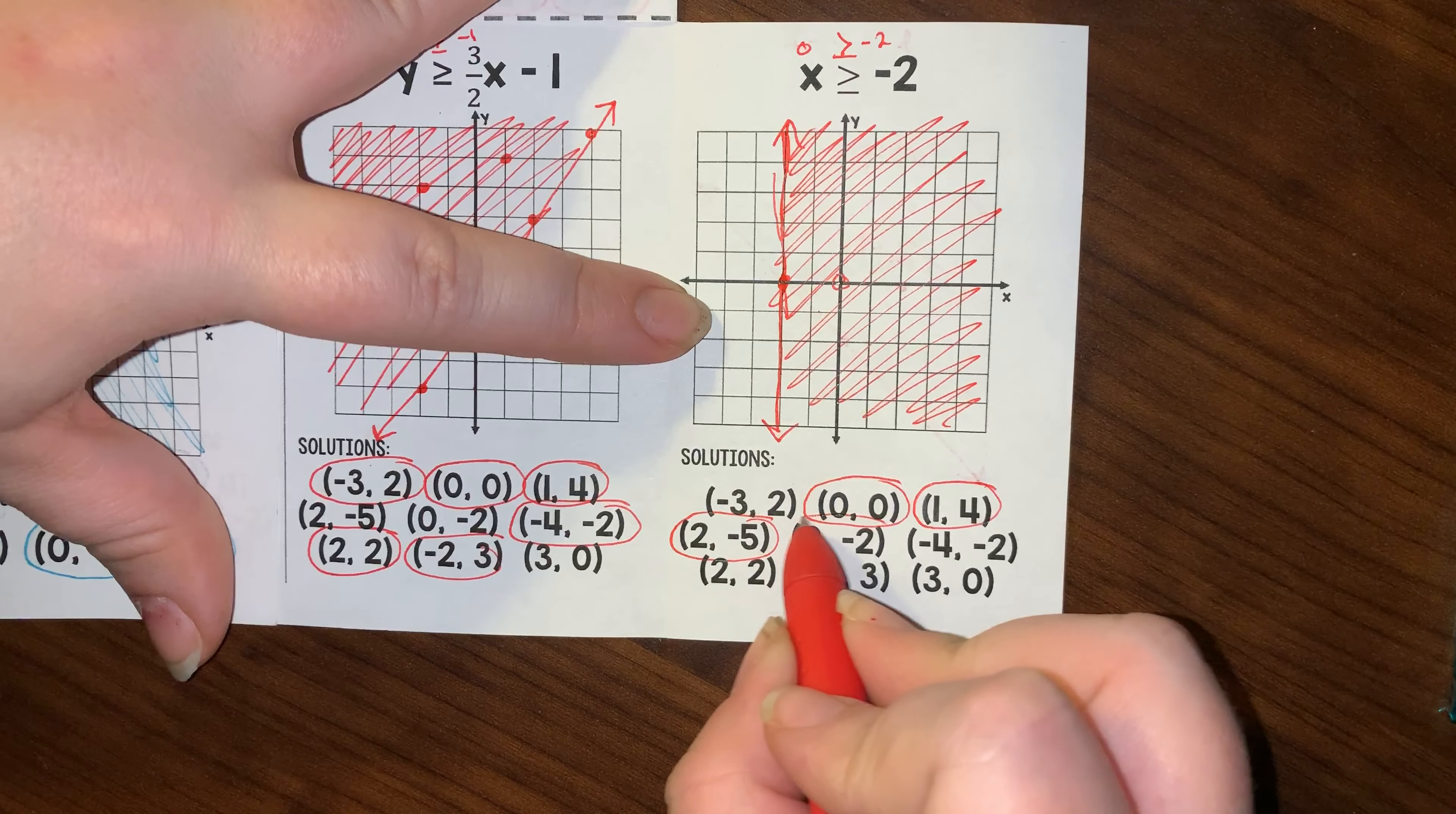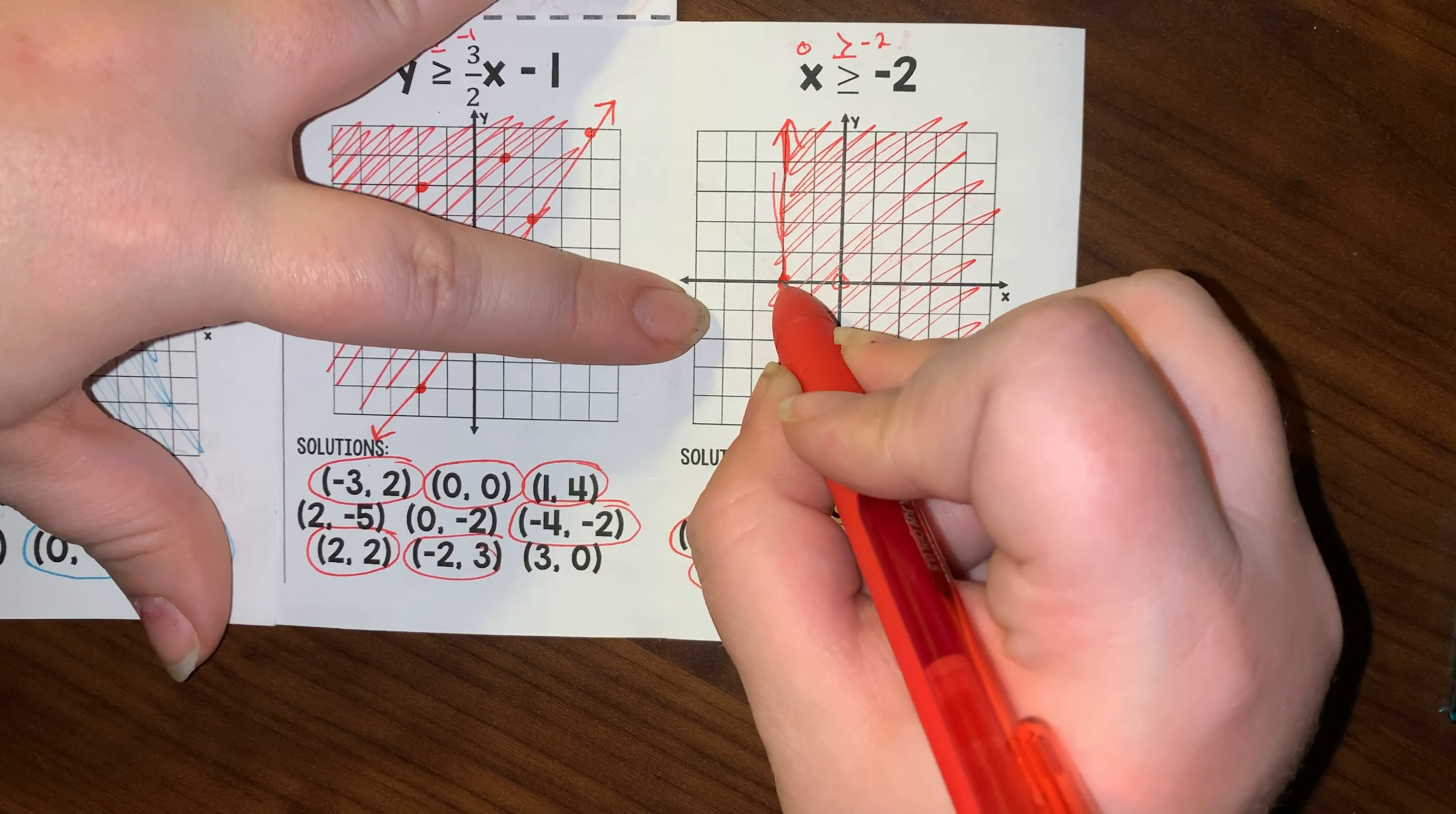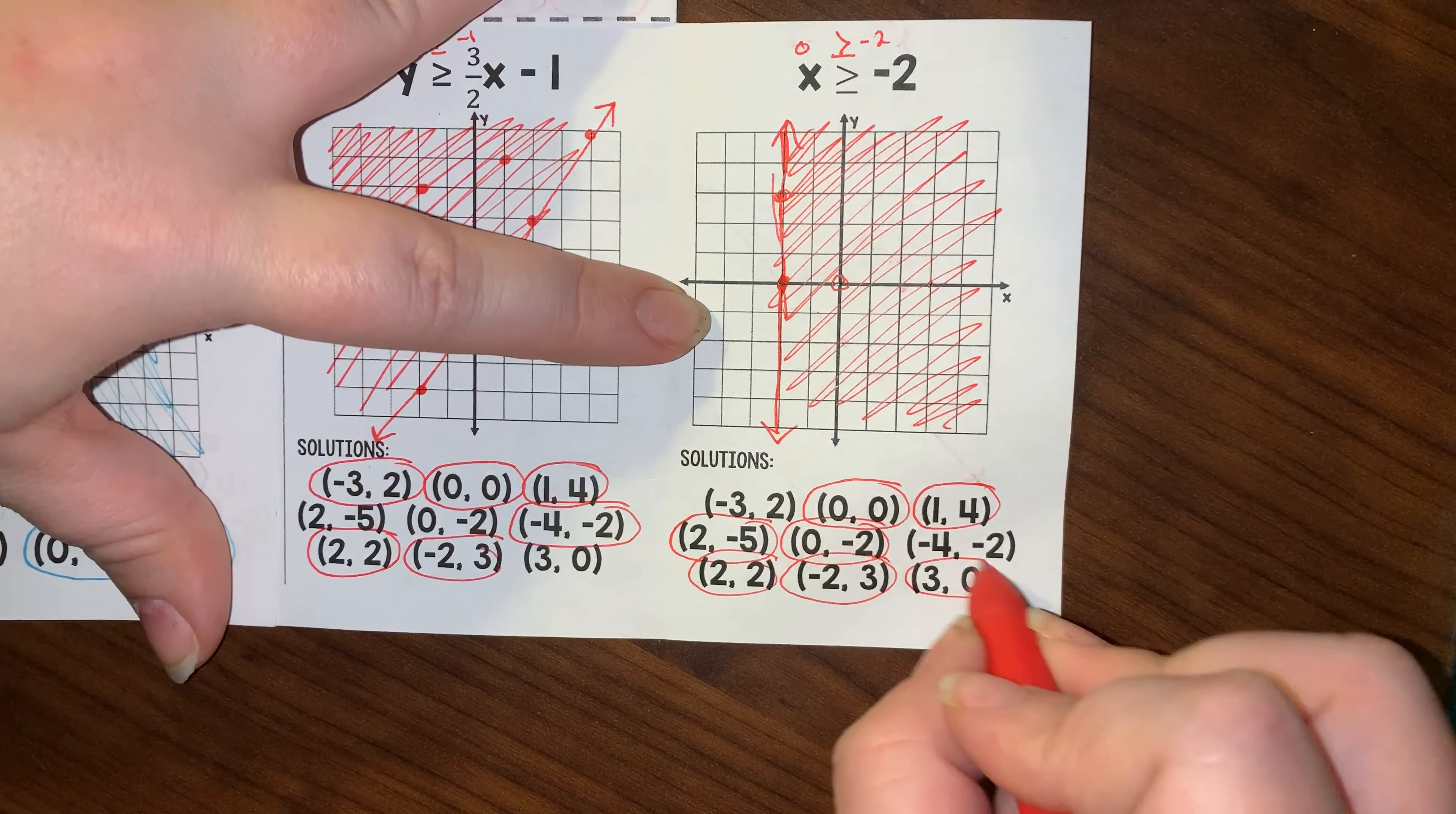0, negative 2, yep. Negative 4, negative 2 is not a solution. Negative 2, 3 is on the line, and because it is a solid line, it is considered a solution, and 3, 0 is also a solution.